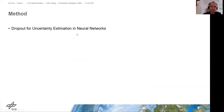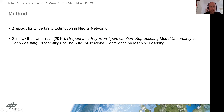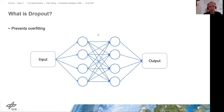This is not very good, but I want to show you a method where you can do something better. The method is called dropout for uncertainty estimation in neural networks, and it was introduced by Gal and Ghahramani in 2016 at ICML.